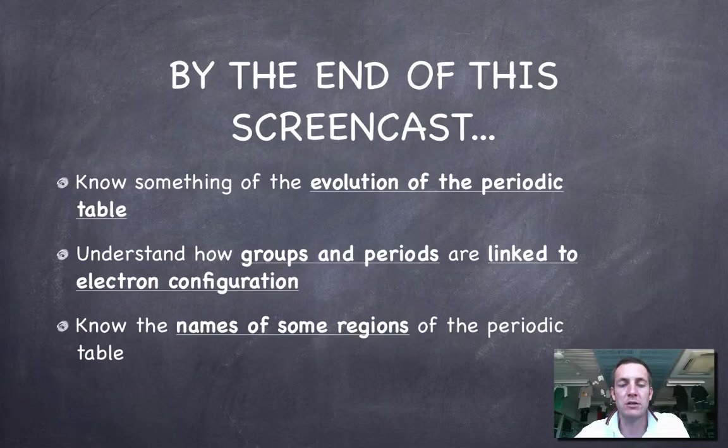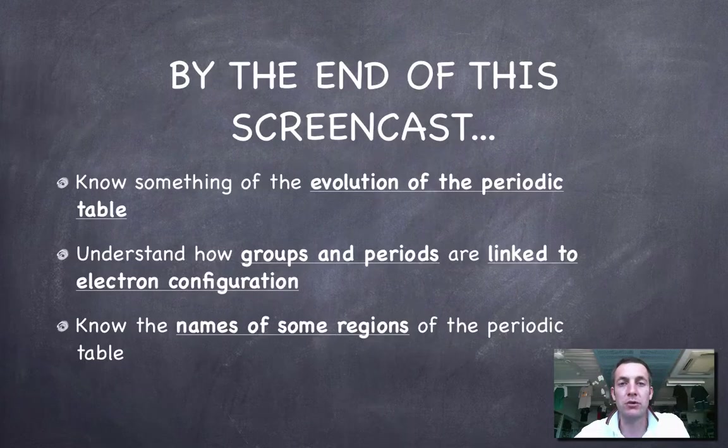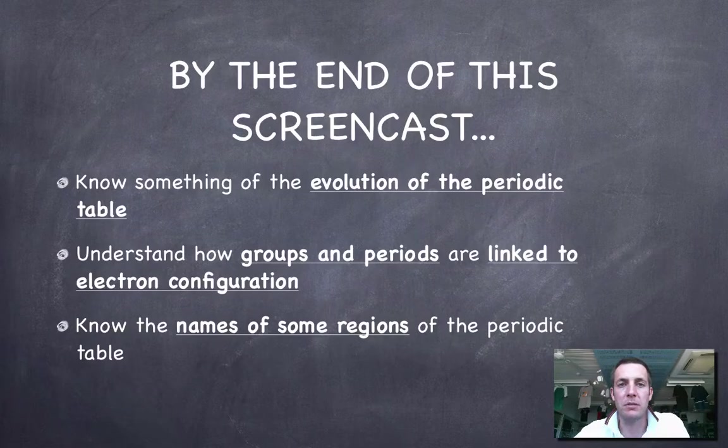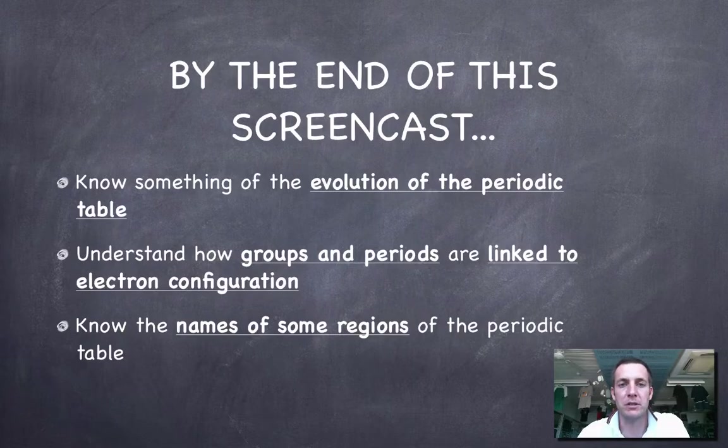You'll also know that the groups and periods that we see in today's periodic table are related to where the electrons are found in an atom. As well as those things, we'll also have a look at some particular families of elements who we've given certain names to and we'll see where they're found in the periodic table.